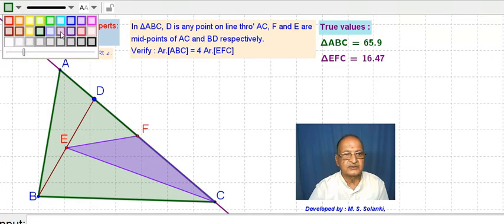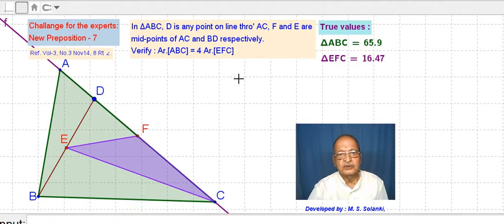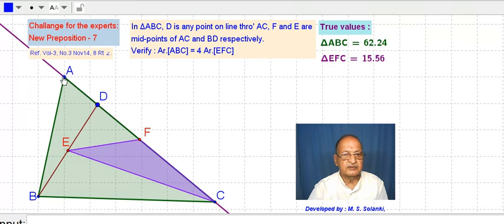Area of green triangle is 4 times the area of this color triangle. This is purple. Now you can see in this condition.